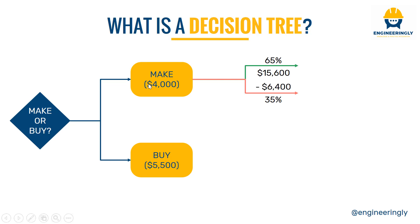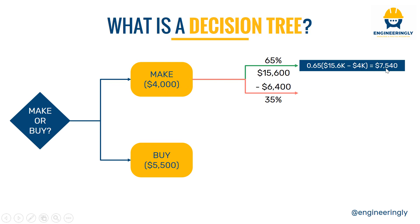Now we calculate the net path value for the make option. We multiply 65% by the difference between the revenue and the initial investment: 65% × (15,600 − 4,000). This results in seven thousand five hundred and forty dollars. For the failure case, the result is minus three thousand six hundred and forty dollars.